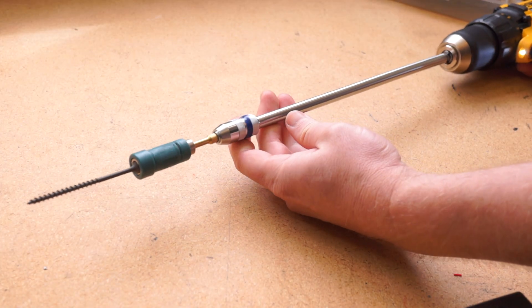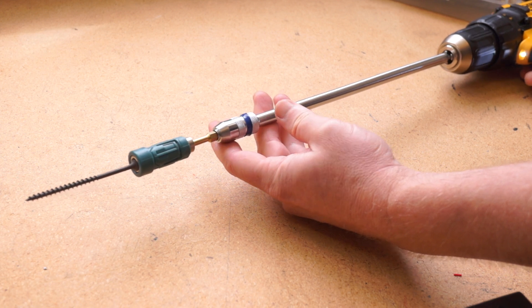You can also put one of these magnetic screw holders on here and dangle the screw out to somewhere hard to reach without it falling off.